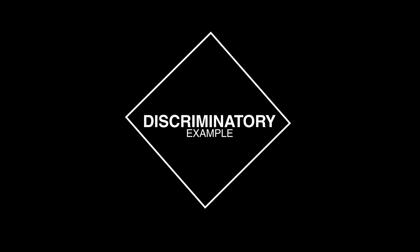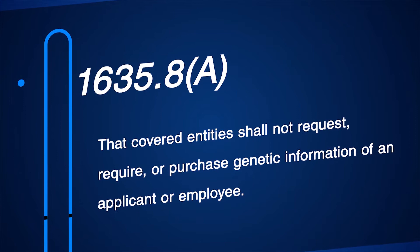It would be unlawful discrimination if, for example, an employer refused to select someone from what they felt to be a stressful position because they learned that her father died of a heart attack at an early age and were worried about her ability to handle stress. The second rule of GINA restricts the acquisition of genetic information by employers and other covered entities. The general rule prohibiting acquisition of genetic information states at 29 CFR 1635.8(a) that covered entities shall not request, require, or purchase genetic information of an applicant or employee.